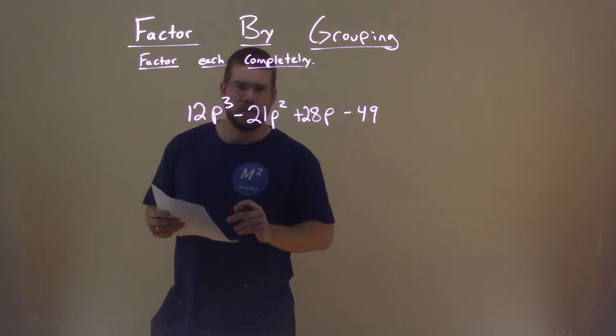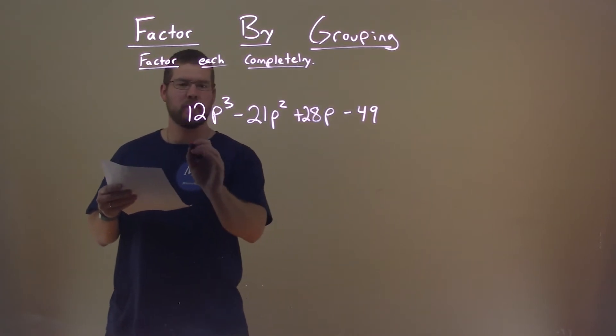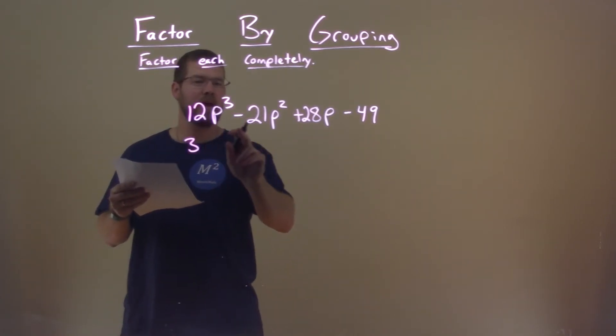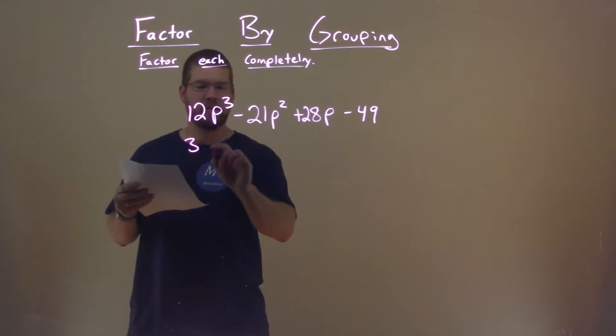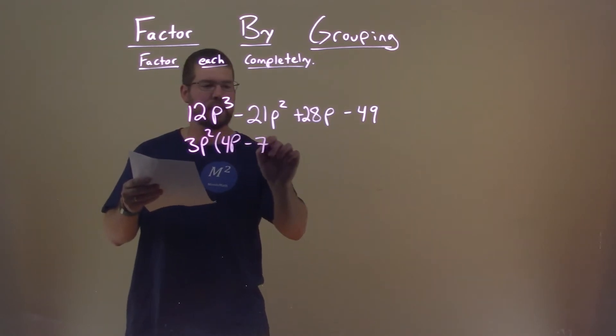Let's look at my first part right here. What do we see? Well, I see that a 3 goes into 12 and 21. So does a p squared into p to the third power and p squared. So if I pull that from both of these, I'm left with a 4p minus 7 right here.